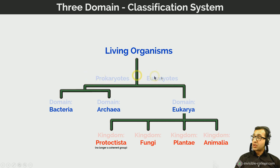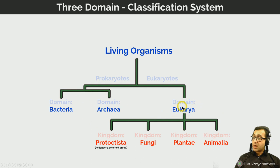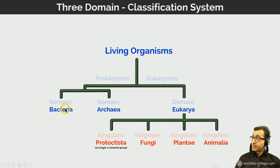Living organisms are generally classified into two large domains: the Prokarya and the Eukarya. These are subdivided into three domains into which all living organisms fit. The Eukarya includes organisms made of eukaryotic cells: the Protist kingdom, the Fungi kingdom, the Plant kingdom, and the Animal kingdom. In contrast, Bacteria and Archaea are unicellular organisms which are prokaryotic.